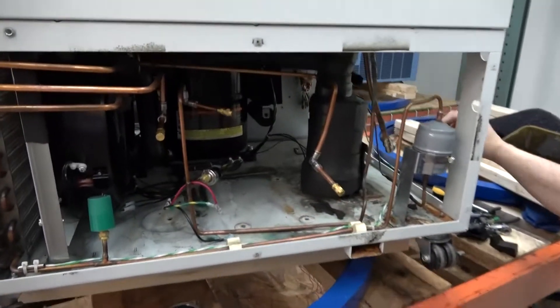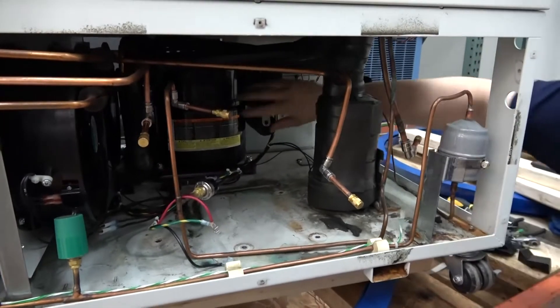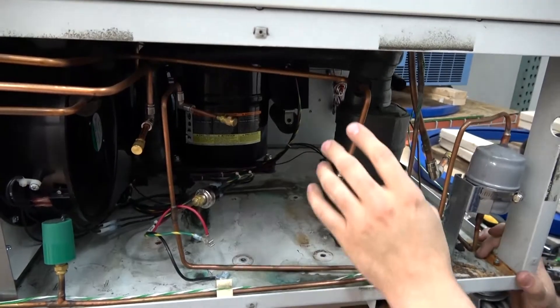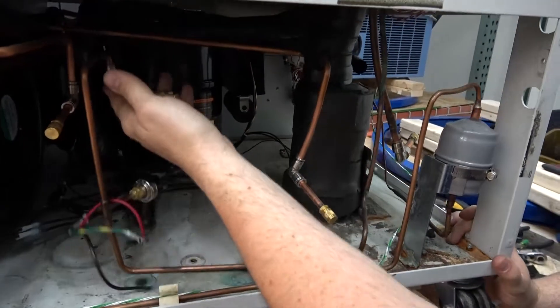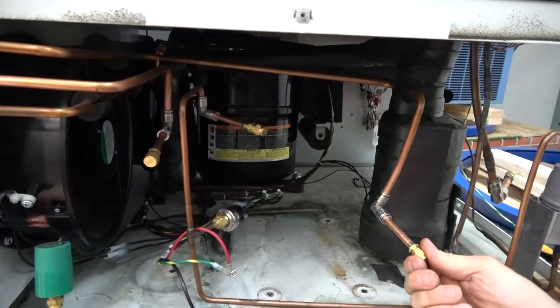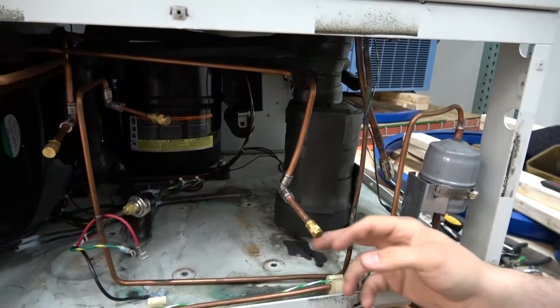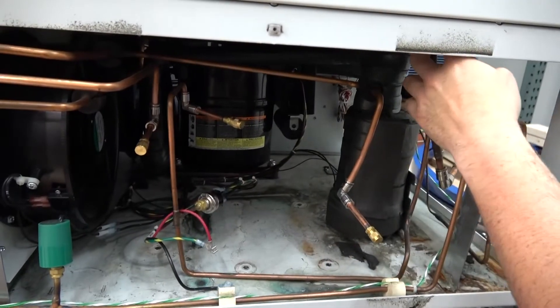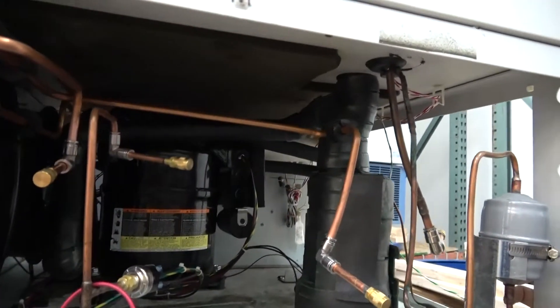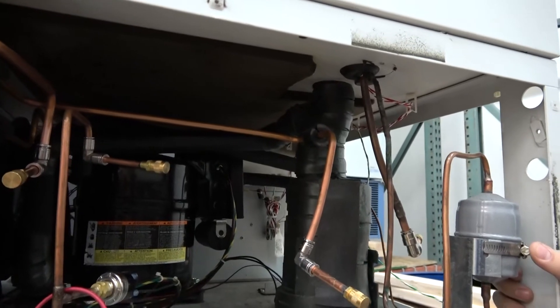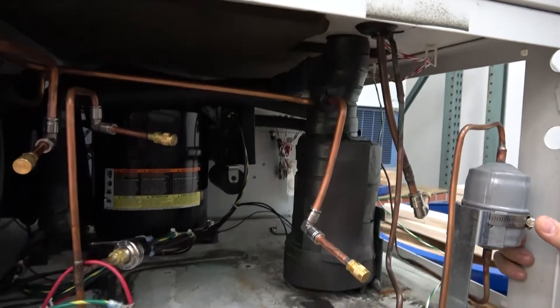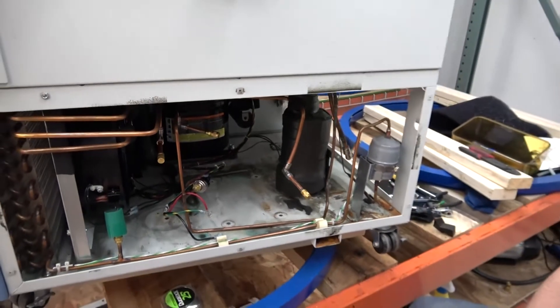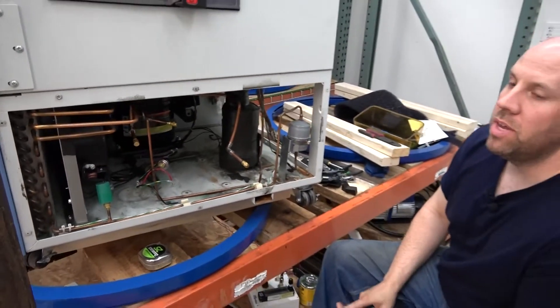And once we do that, we're left with something like this. All the components are out. This is first stage, this is first stage, that's first stage. So all the second stage components are out. And what we do is we tap into the lines with quick connects and we flush all the lines that are left in the freezer with alcohol.